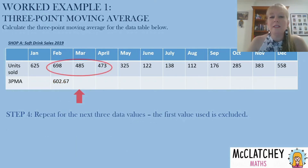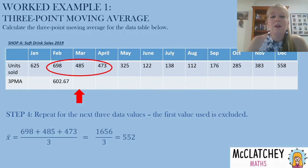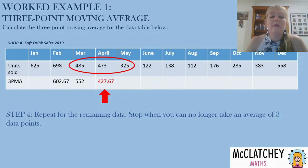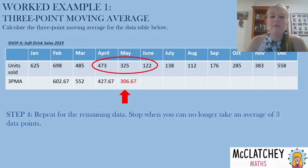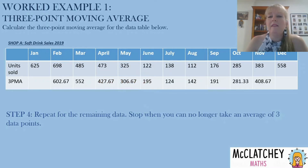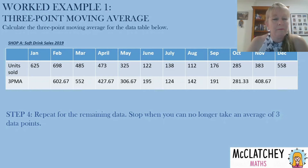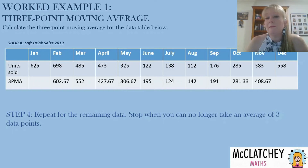Now we move along and do it for the next three data values — that first value is no longer included — and we get a new value of 552. Then we move along again and repeat, just keep moving each time to the right and putting in the value of each three-point average. You'll notice that the first column where January is and the last column where December is, there's no information there, because you couldn't calculate a three-point moving average of just January and February — that would only be a two-point average. So it has to be three values, and that's why you don't fill as many cells as there are data points.